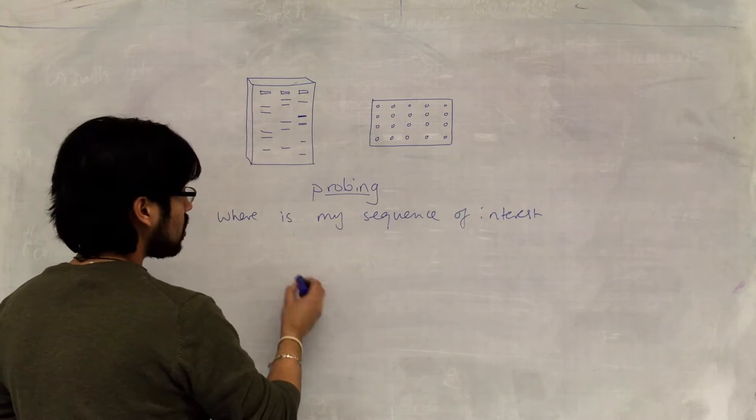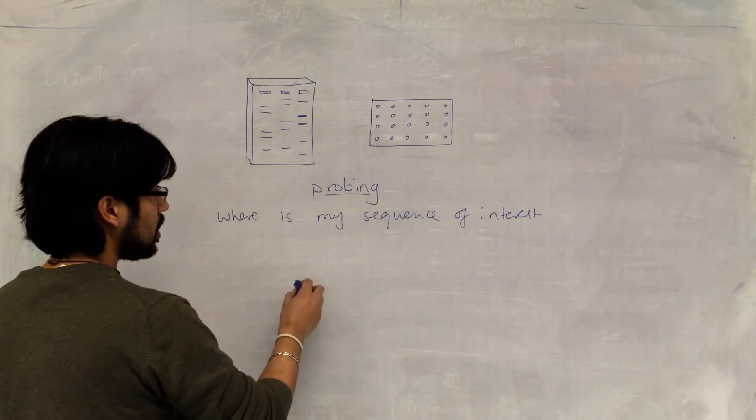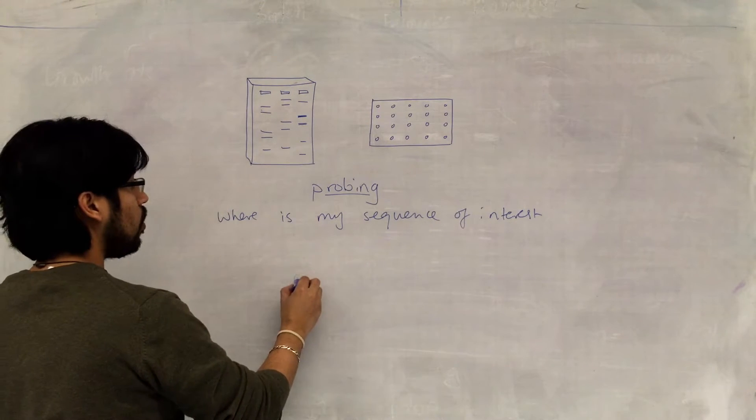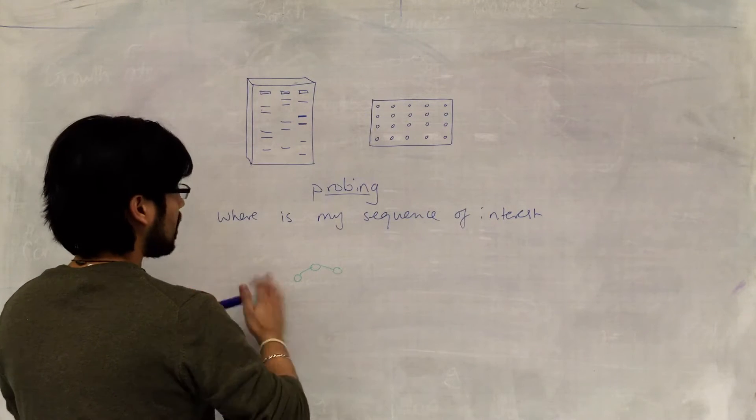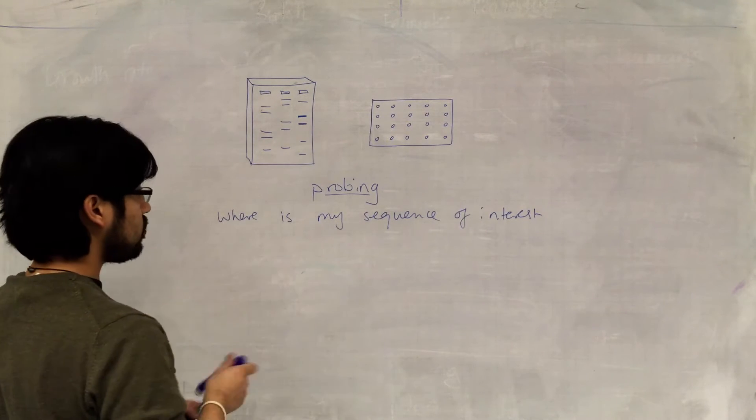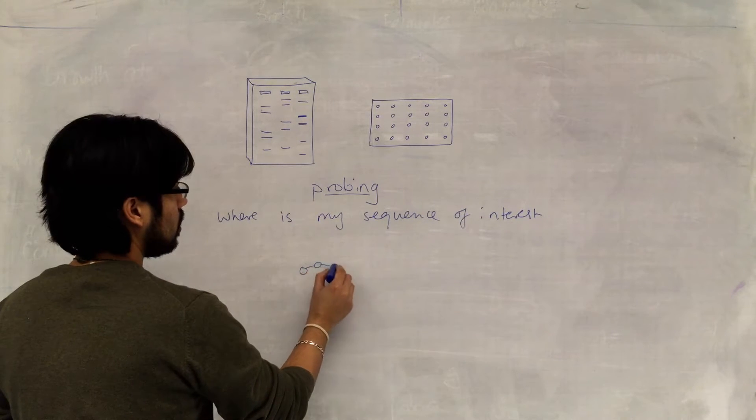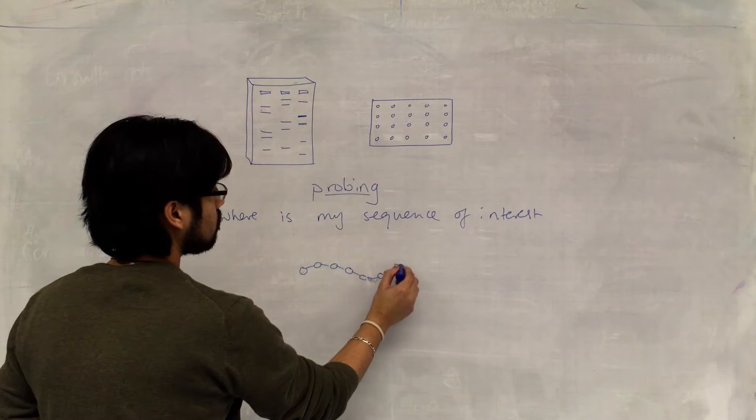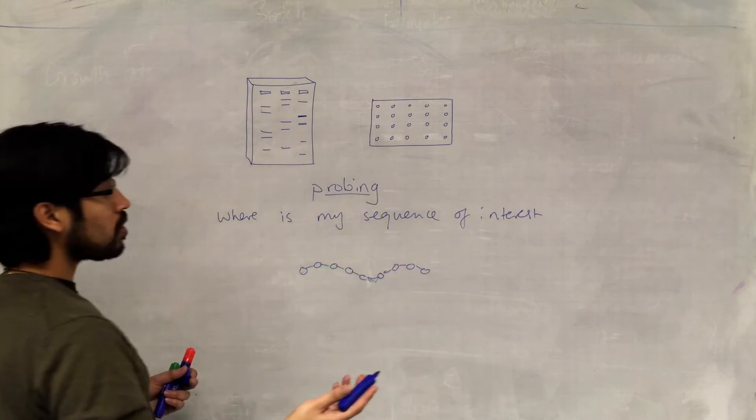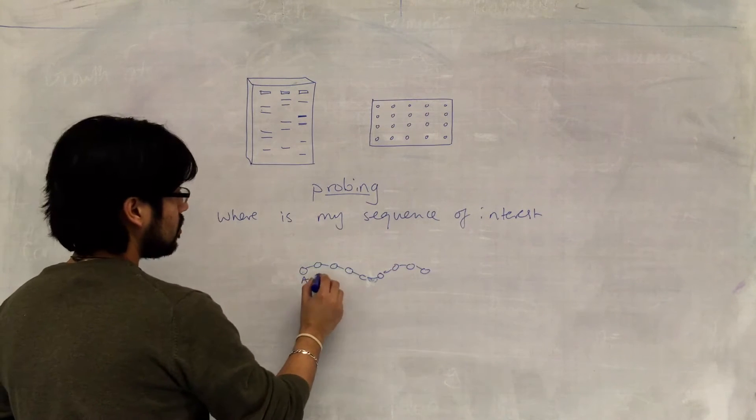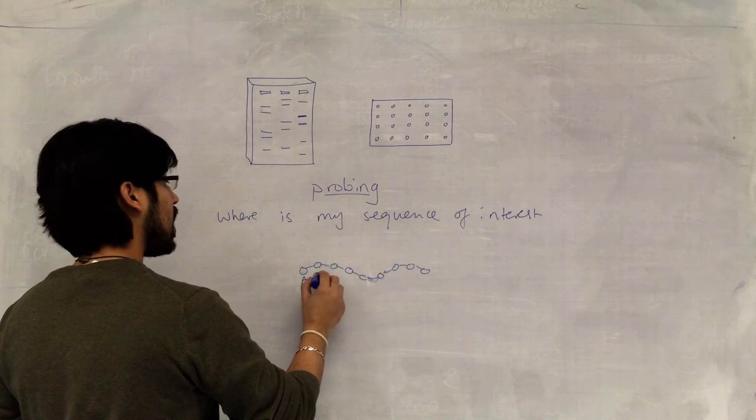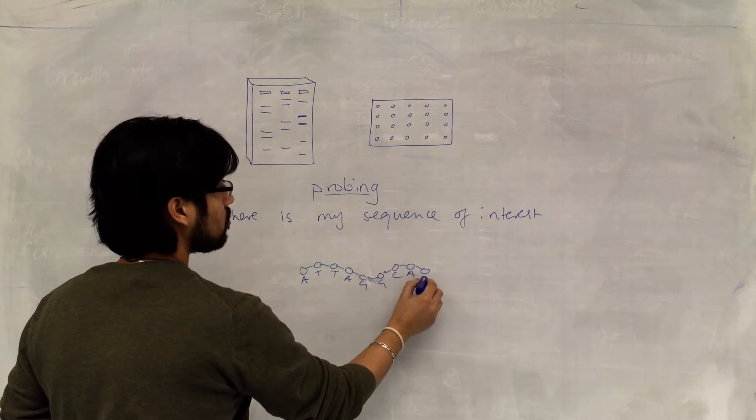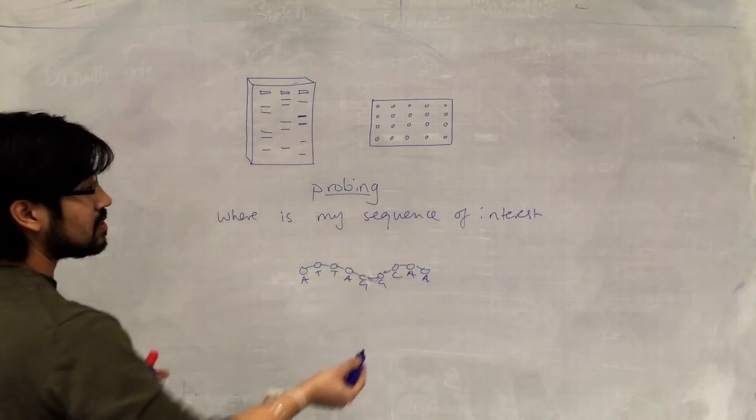So I construct a nucleotide. Using nucleotides, I make a short segment of, like a polynucleotide. Say it's that long. But the bases that this polynucleotide has are very specific to the sequence that I'm looking for. So say it's that, for example.